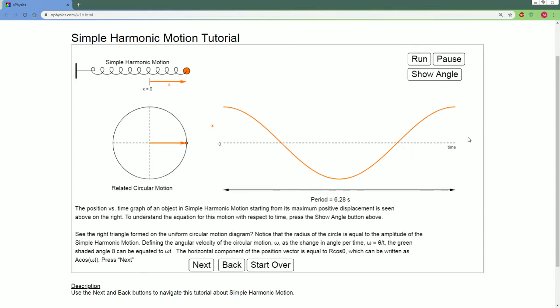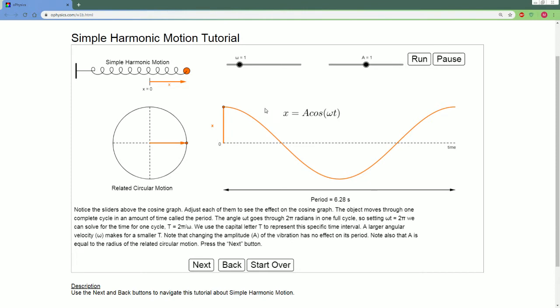This time that it takes is going to be defined by this idea called the period. So, the position of the wave can be defined as A, which is the amplitude, cosine, which is this description of the wave, omega times t. This is one complete cycle of the wave. Notice this is one complete cycle of the wave, one complete revolution of the circle. One complete cycle, one complete revolution is given as this idea called the period, and we use that as T. That can be T equals to 2 pi over omega.